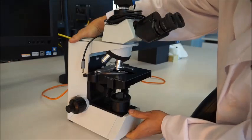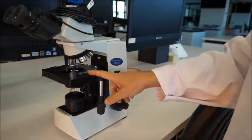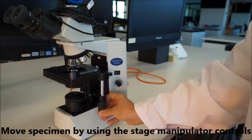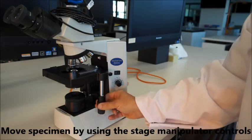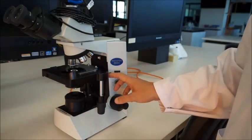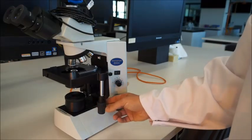The other thing that you should worry about is when you go to move the stage around, so you're moving your specimen around on the stage, use these manipulator controls here to move your sample back and forth. Don't grab the stage and move it because it's a precision instrument in there. It's going to get damaged if you keep doing that.